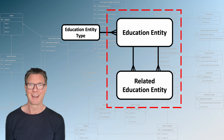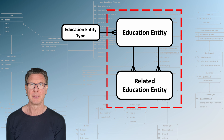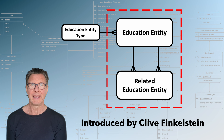This data construct, which I jokingly call the data dark web, is also referred to as normalization to fifth business normal form, but it is not quite the same as normalization to fifth normal form. It was introduced by an Australian, Clive Finkelstein. I've put a couple of links in the description of this video.